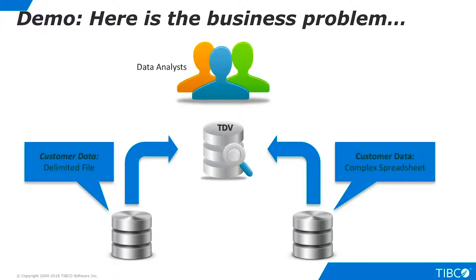Here is the business problem we illustrate in this demo. Our data analysts need to join various types of customer data to get a more well-rounded view of their customers. Some of this data resides on a delimited file. Other data resides in an Excel spreadsheet. This spreadsheet is somewhat complex — it includes multiple tabs, and the data on one of the tabs is in an irregular format.